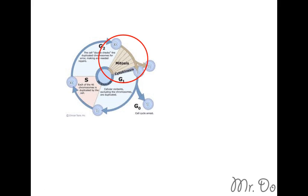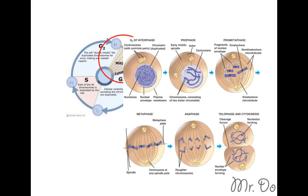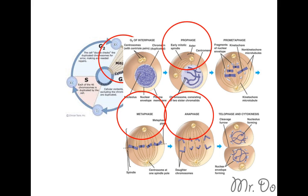In the mitotic phase, it's divided into two other phases: mitosis and cytokinesis. Note that cytokinesis is not part of mitosis. Inside mitosis, there are four other phases: prophase, metaphase, anaphase, and telophase. In short, just remember PMAT.